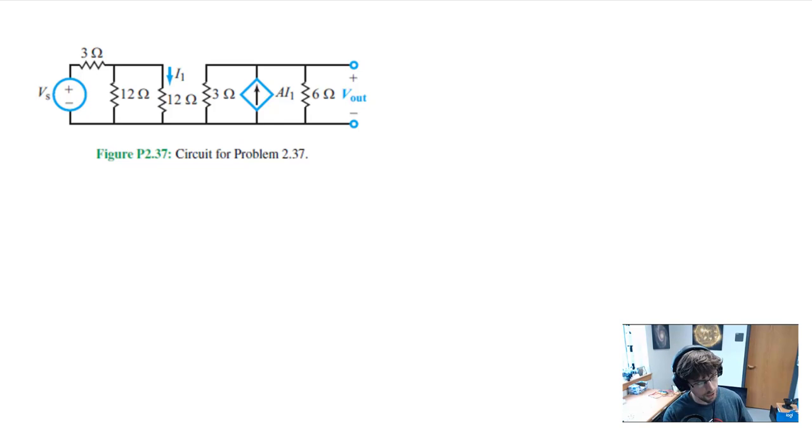Let me go ahead and write out what the question is. So here's the problem. If Vout divided by Vs, so you notice that it has the output potential and it has the input potential, the source potential, if you will. So the ratio of those two is 9. What is A? Put a question mark here. You say, what do you mean, what is A? Go ahead. Let's just take a look at the circuit for a moment. And we notice that we have again another dependent source.